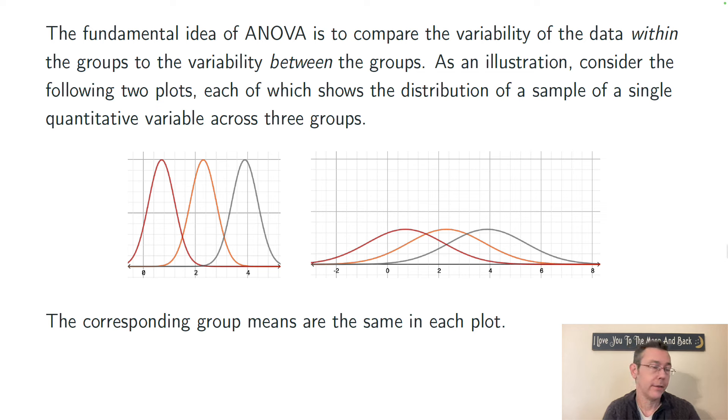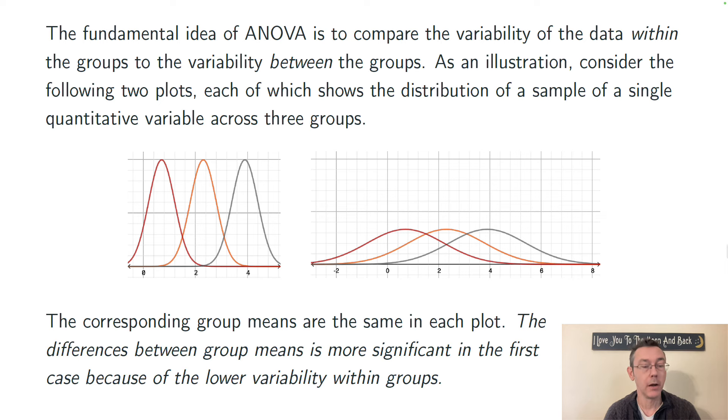In the second case, on the other hand, in the right plot, we have three different groups where there is a lot of overlap between the data. Even though the group means are exactly the same as in the first case, because there's so much more spread in the data, there's much more overlap in these distributions, the evidence that the group means are different in the larger population is actually much weaker. The difference between the group means is more significant in the first case because of the lower variability within the groups.